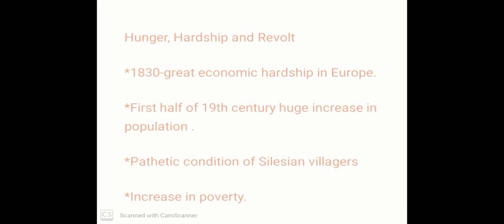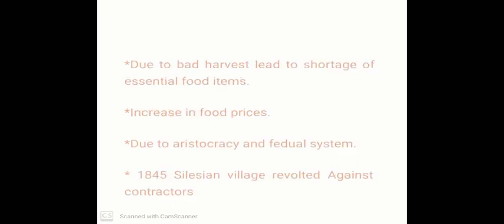Day by day, European people's conditions became worse. Due to bad harvests, it led to a shortage of essential food items, which led to an increase in food prices. Moreover, people were not happy, especially farmers and weavers. Due to aristocracy and the feudal system, the aristocracy were still enjoying power and peasants were struggling under feudal dues and obligations. All these causes led to a revolt in 1845, when Silesian villagers revolted against the contractor.